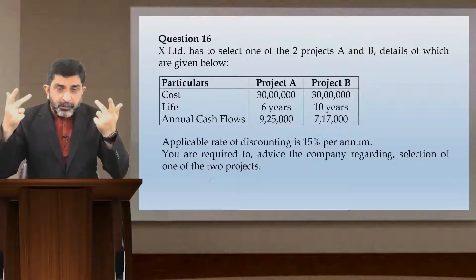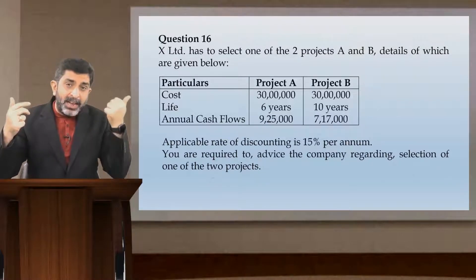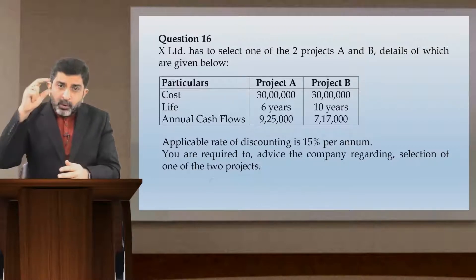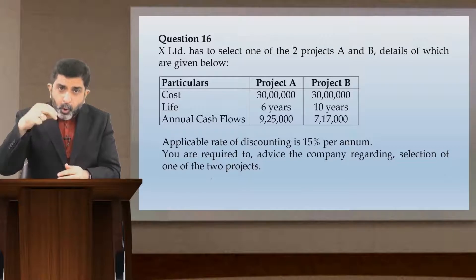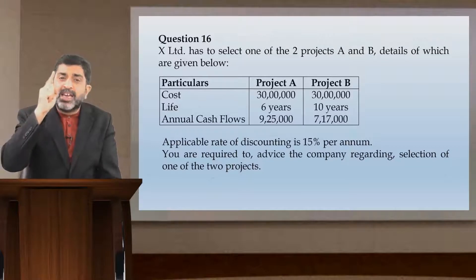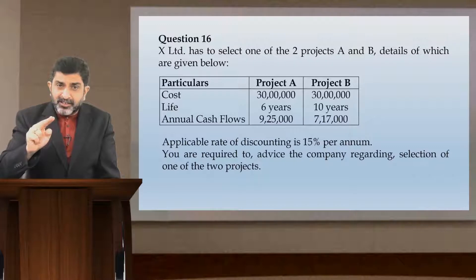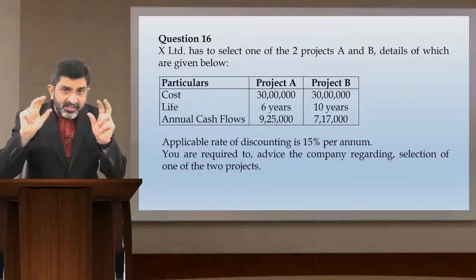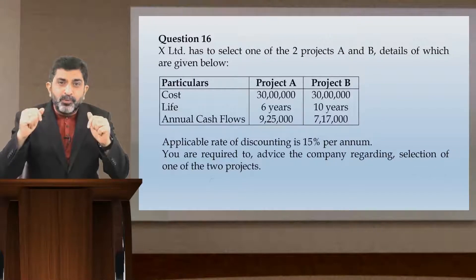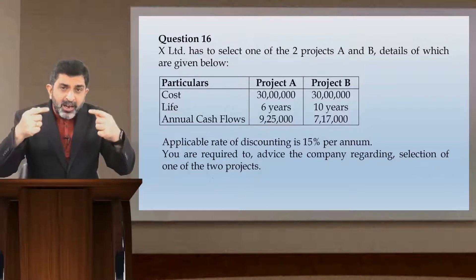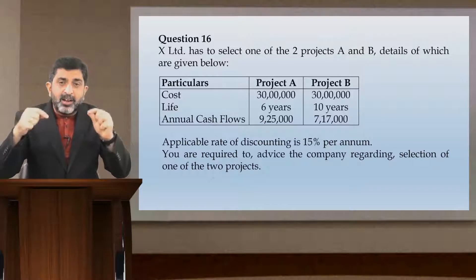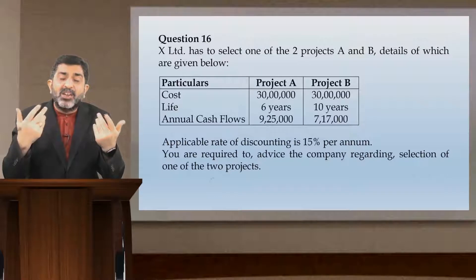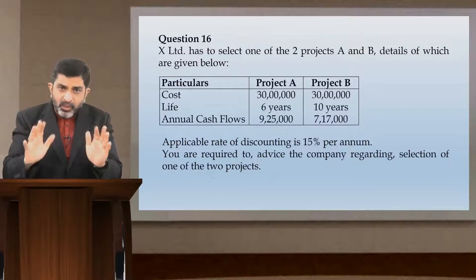When the costs of two projects were different, we applied the profitability index — the present value of inflow expressed for each one rupee of outflow. On the other hand, when two projects have different lives, what you do is convert the NPV into a per annum kind of NPV. This process is called annualization.